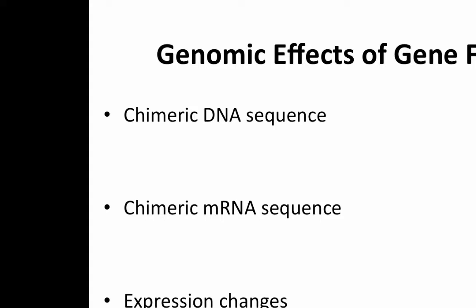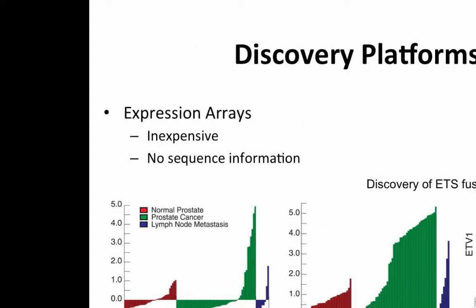We can leverage three different signals to identify gene fusions: chimeric DNA sequence, RNA sequence, and expression change. For expression arrays, this is actually how the TMPRSS2-ERG fusions were discovered. They used expression arrays with something called COPA, which was essentially preempted by RNA-seq coming on the scene. They looked for outlier expression to identify a candidate set of genes, then further restricted their analysis to one particular set.